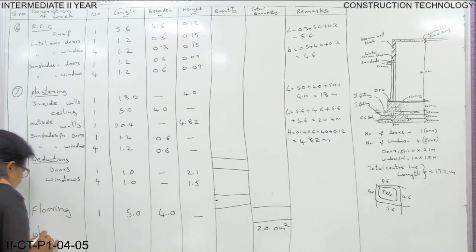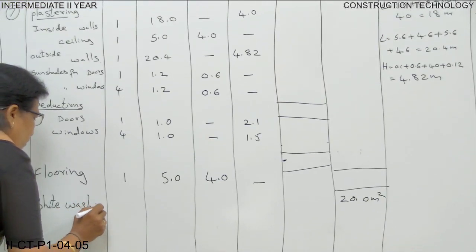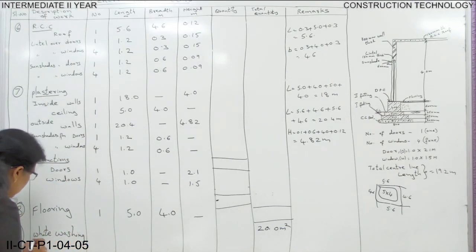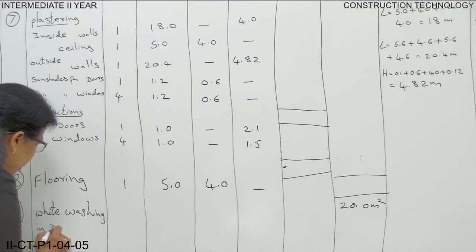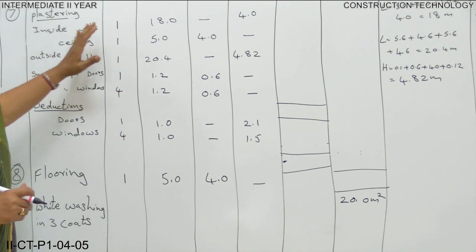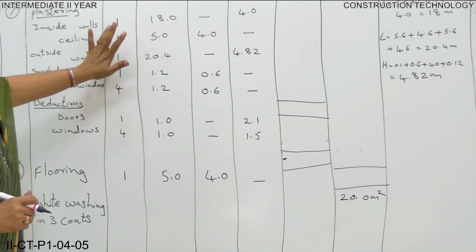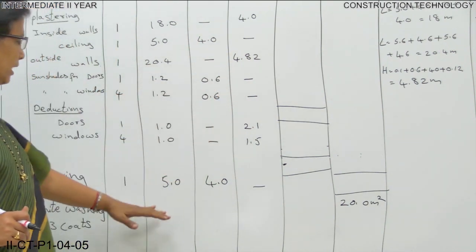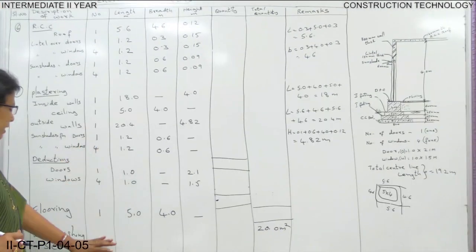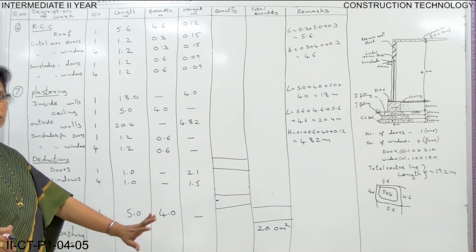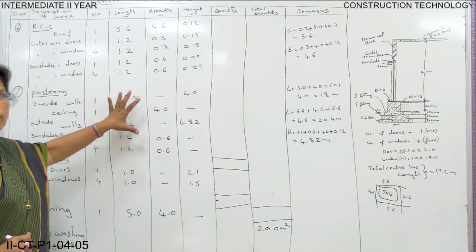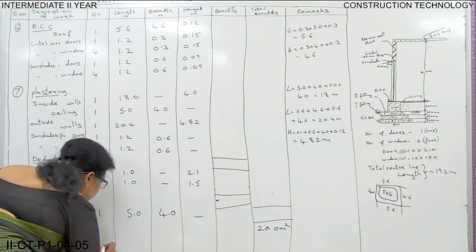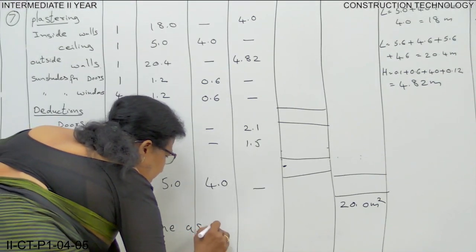The last item is white washing. Wherever you are doing plastering, there you will be doing white washing — sometimes including primer, three coats of white washing — for inside walls, ceiling, outside walls, sunshades, and everything. In the exam you have to do the whole procedure, but here I am writing 'same as plastering.' In the exam you must not write it like this; you should fully calculate as done for plastering.